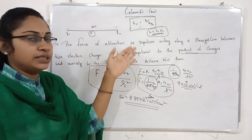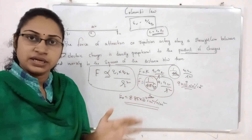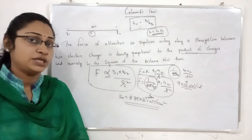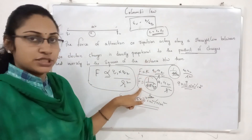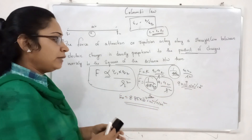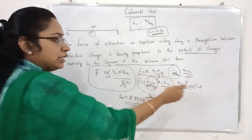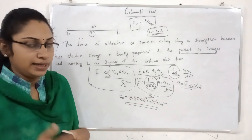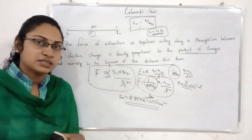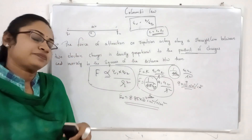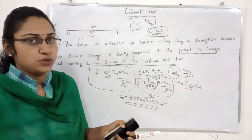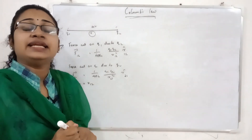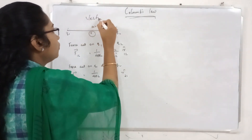If you have two charges, you will see the distance and the force of attraction or repulsion. If you look at this equation, it is 1 by 4 pi epsilon 0, Q1 Q2 by r squared. Now let's take a look at the vector form. We can also say that vector form is also related to electric field. Now let's take a look at the vector form of Coulomb's law.